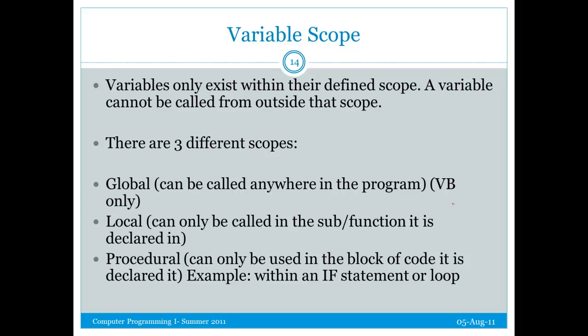So let's talk about scope for a second, because this is important. Variables only exist in the scope they're defined in. So if I define a variable in a certain scope, it can only be used in that scope or a scope below it. It cannot be called from outside that scope. Now there are three different types. Global can be used anywhere in the program, any sub procedure, any module, any place. Local is only in the sub or functions declared in. Procedural can only be used within an if statement or loop, the block of code it is declared in.